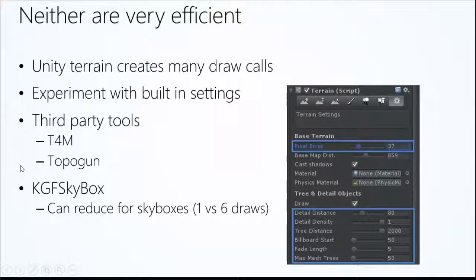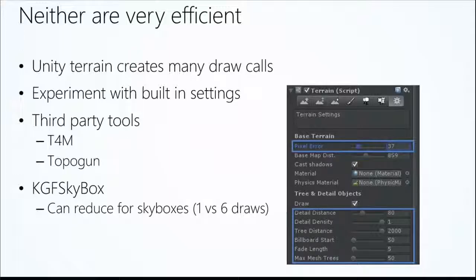We'll do a demo with TopoGun as well. For skyboxes — yesterday we looked at creating a sky in our world. A skybox has six images that get tiled around your world to make it look like you have a sky, and that's six draw calls. The KGFS Skybox plugin from the asset store reduces it down to one draw call. Virtually any professional developer uses several assets they love from the asset store.